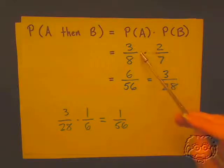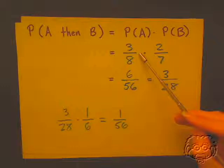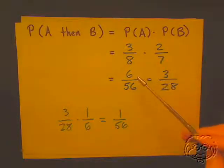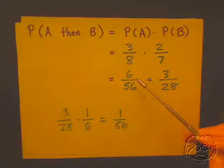Well, event A is definitely three over eight. Three out of every eight times I dip into the bag, I'll pull out a blue marble because there are three blue marbles. If I dip in a second time, what's the probability of pulling out a blue marble? Is it three-eighths again?